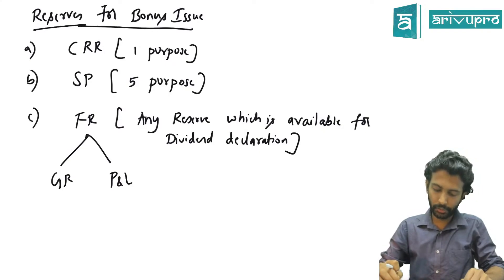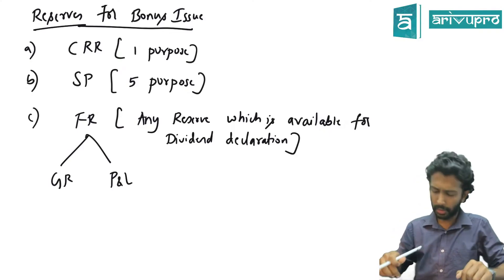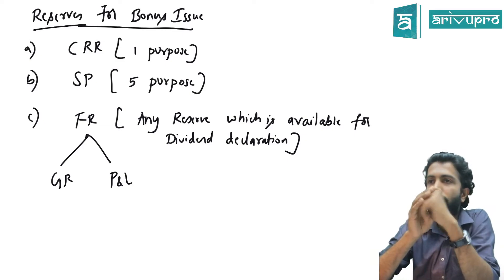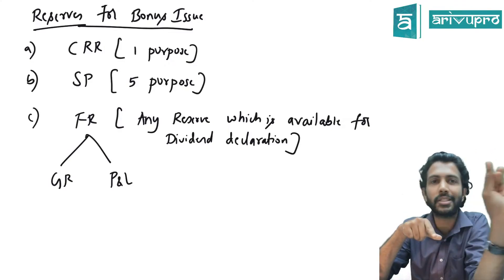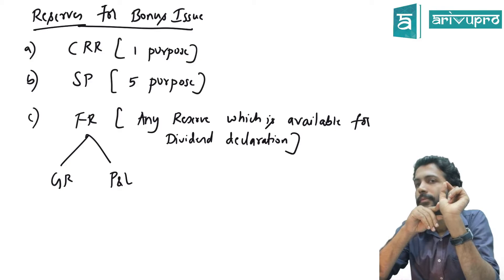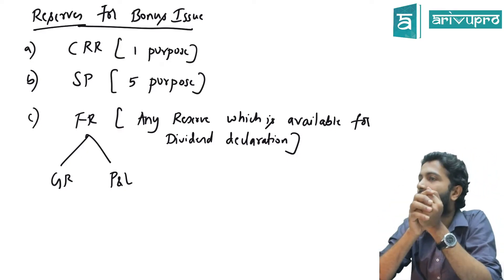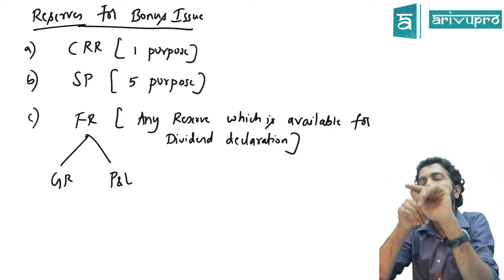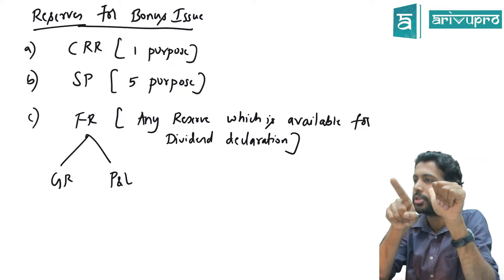Can we take up the first question to see the actual journal entry for bonus? Let's brush up once. Bonus shares means — three components — extra shares given to existing shareholders at free of cost. The other name: capitalization of profit, because your P&L is getting converted into capital. By 'profit' they don't mean only P&L; they mean reserves and surplus.